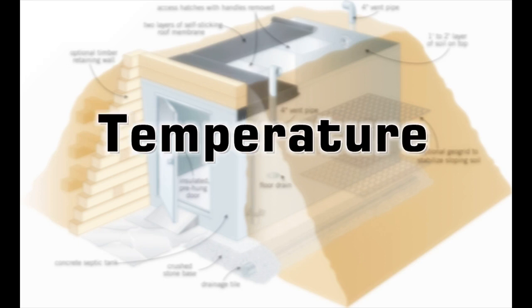The root cellar must be kept cool enough to preserve the vegetables and fruits, but not so cold that the produce freezes. The soil around and above helps keep the temperature more constant. Vents bring in cool air from the outside when needed. Insulation makes it easier to keep the coolness in.